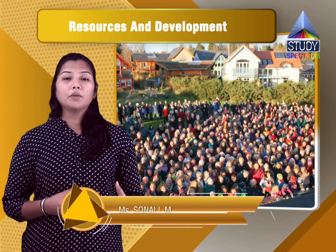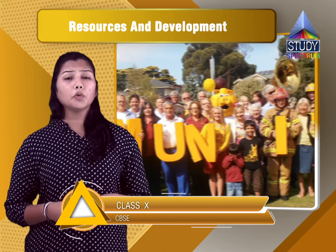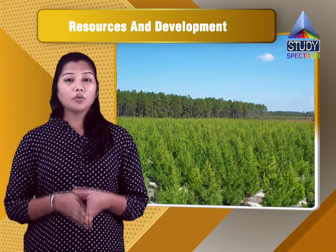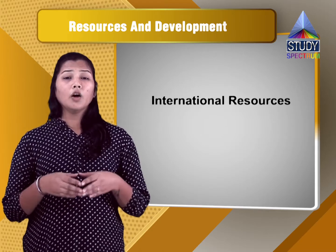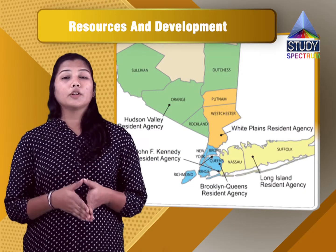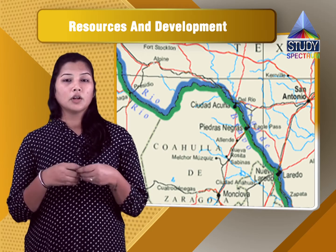Community owned refers to resources owned by a particular society or the place where you live — the whole community might own a community ground or a community garden. National resources include forests, wildlife, and political boundaries, as well as oceanic areas up to 12 nautical miles (19.2 km) from the coast — that is the territorial water considered as national ownership. International resources are ocean resources beyond 200 nautical miles, belonging to open ocean and international territory — no country can claim ownership over such areas.